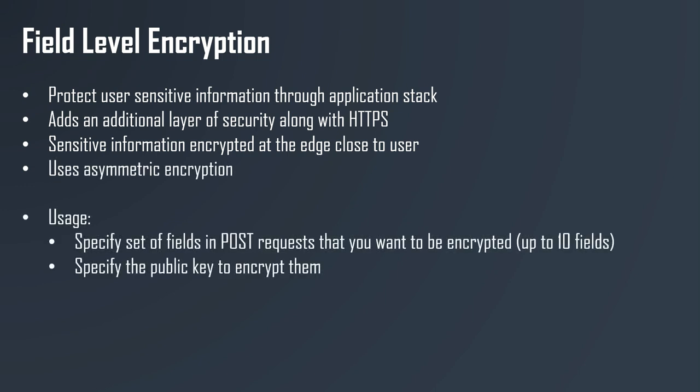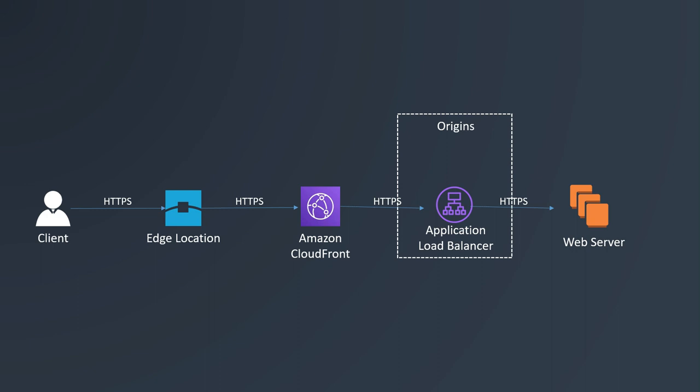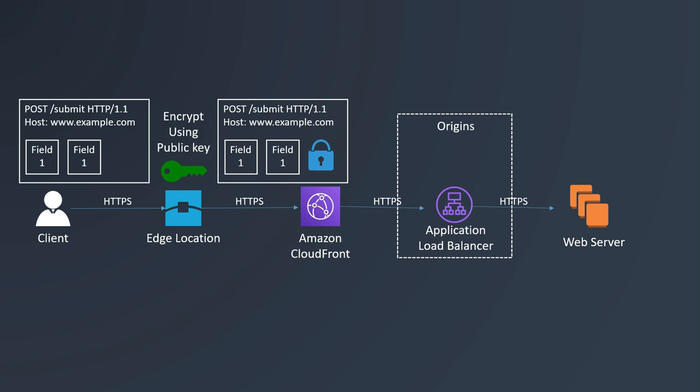Here is how it works. In POST requests made to Amazon CloudFront, there will be a set of fields — up to 10 fields — that we want encrypted, and we specify the public key to encrypt them with. For example, a client communicates over HTTPS to the edge location, which forwards to CloudFront using HTTPS, and then all the way to the origin through an application load balancer to your web server. If a user sends credit card information, we specify field-level encryption for that field, and the edge location will encrypt it using the public key. The encrypted credit card data is then passed all along from the edge location through CloudFront to the origin.